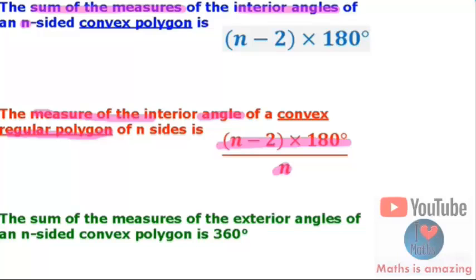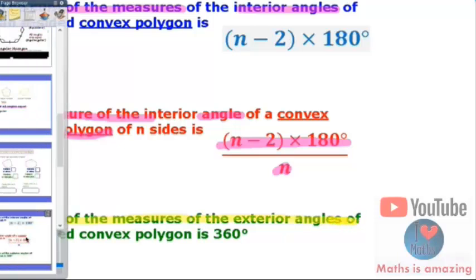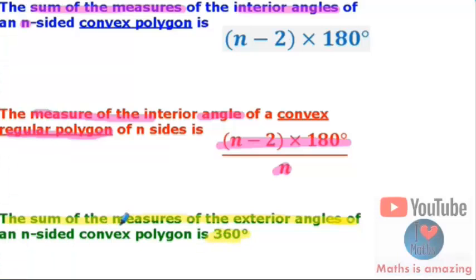Notice the next point is very important: the sum of the measures of the exterior angles of an n-sided polygon equals 360 degrees.